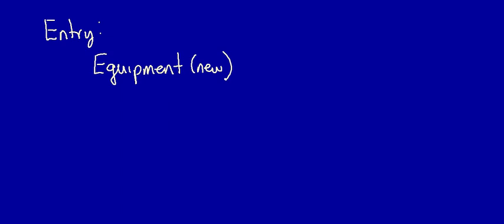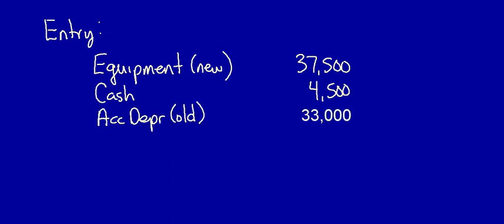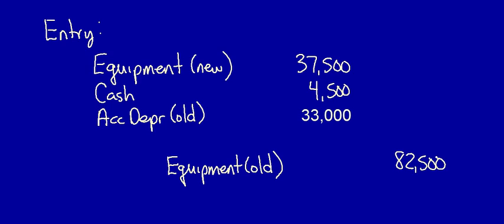We can record the new equipment that we received at the fair value of the equipment that we gave up. Then we have to recognize the cash we received — $4,500. Next, we have to get rid of the old equipment, so let's get rid of the accumulated depreciation from the chart. Now we have to get rid of the old equipment — that was $82,500 directly from the chart. Do the debits equal the credits? No — we are actually short on our debit side by $7,500. That's a loss on disposal.